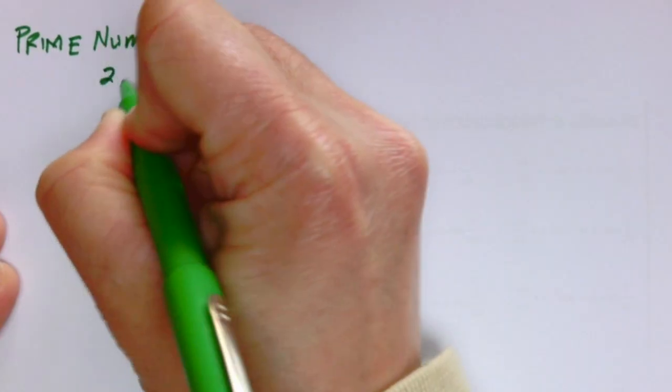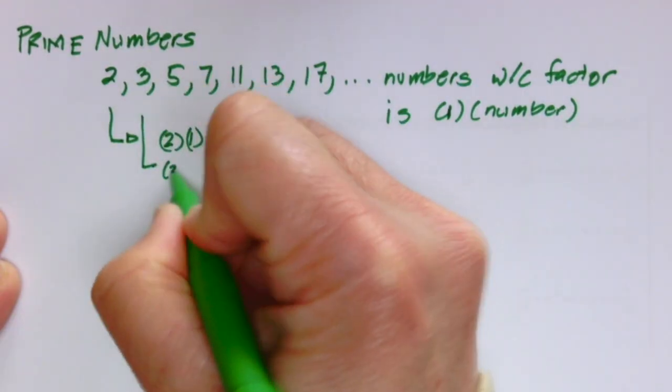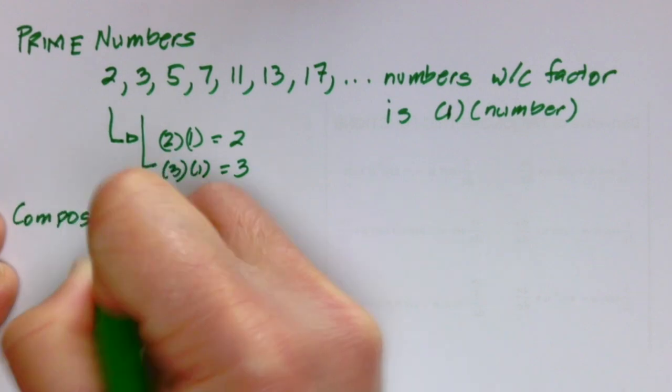Prime numbers are numbers like 2, 3, 5, 7, or any numbers whose factor is just 1 and the number itself.